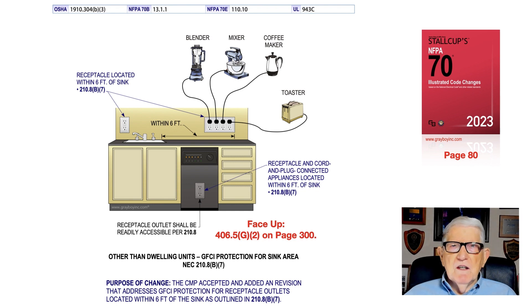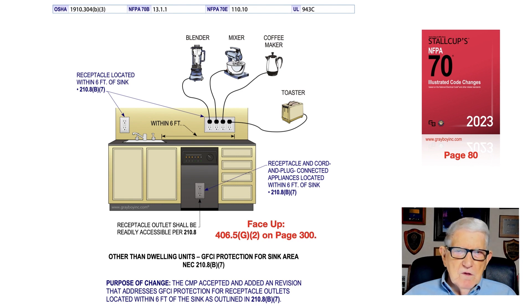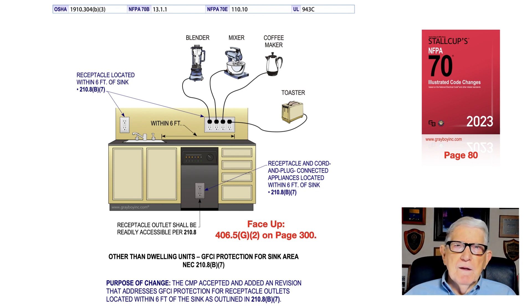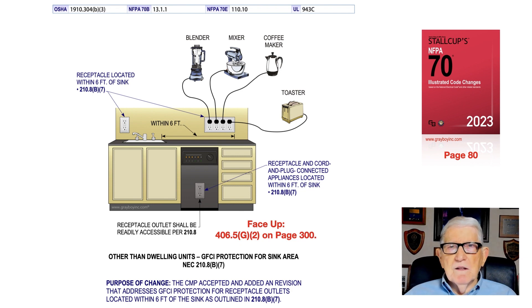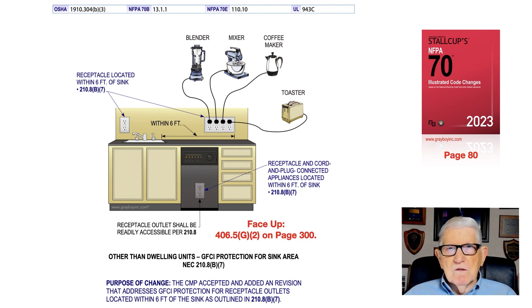On page 80 of the NEC, or in the Stallcup Illustrated Code Change book, this information is available. If a receptacle is not readily accessible, you could have a regular receptacle protected by a GFCI circuit breaker in the panelboard. The key point is that receptacles located within six feet of the inside wall of the sink require GFCI protection for personnel.